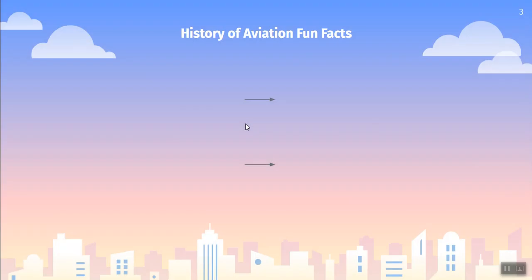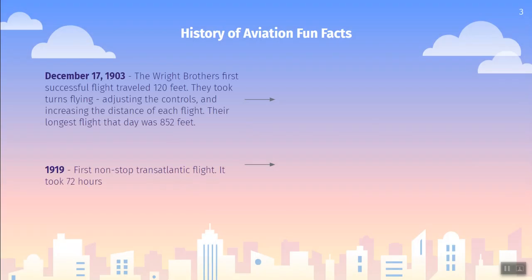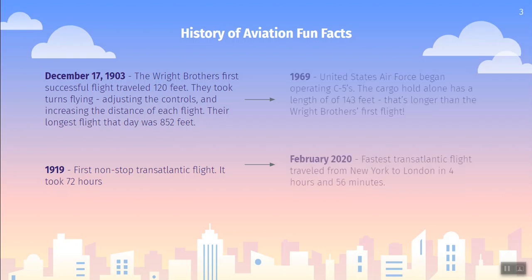As we look at some aviation history fun facts, I want us to look at the progression of things. In 1903, the Wright brothers had that first flight. And all of 16 years later, they went from 852 feet to the first non-stop transatlantic flight — meaning they got all the way across the ocean — and that happened in 1919. Now that flight took 72 hours, which is an incredibly long time to be in an airplane. And in the past hundred or so years, flight and aviation have come such a long way.